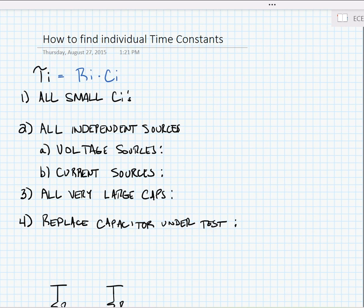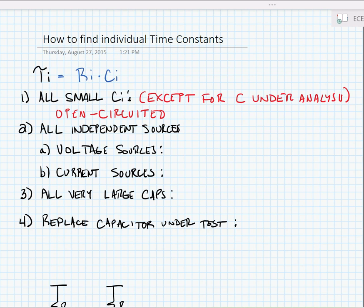So in order to do this, all small capacitors except for the one that we're analyzing will be open circuited. This makes sense. Any small capacitor that's not being analyzed at high frequency has a relatively high impedance, so we can treat it like an open circuit.